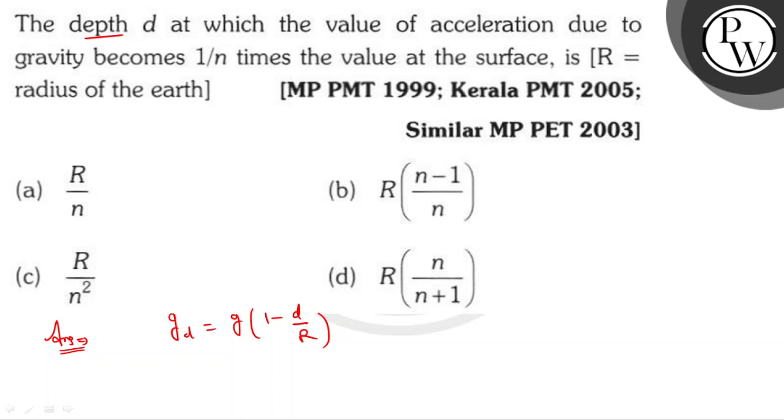How much depth? 1 upon n times. This is G upon n times. What is the depth at the surface? So, G times (1 minus D by R).